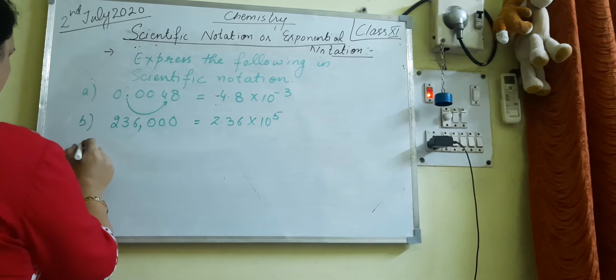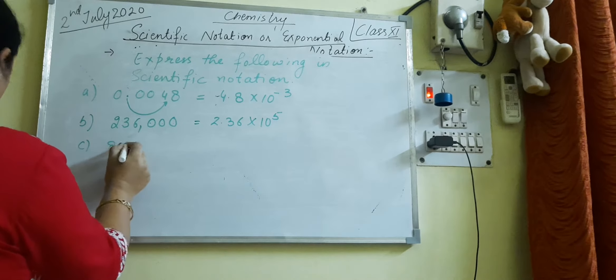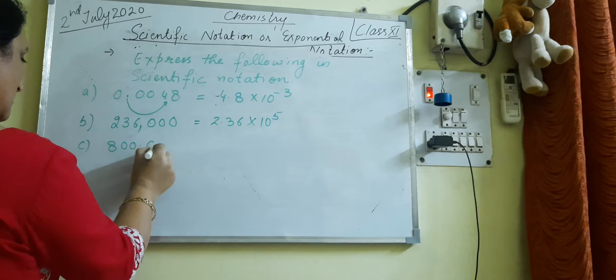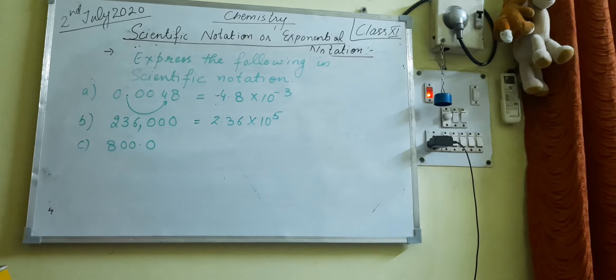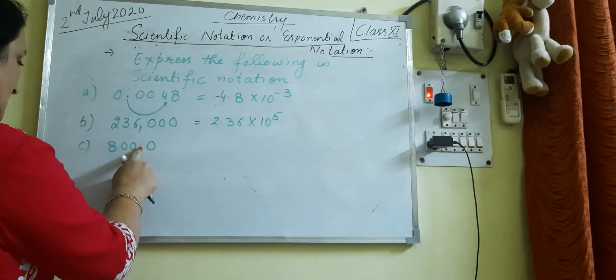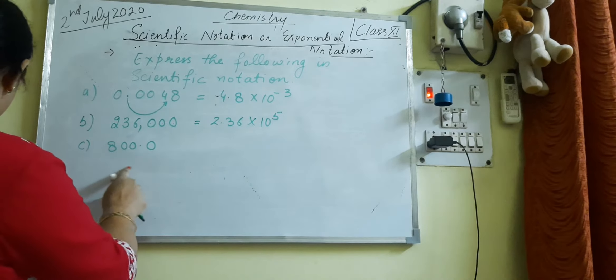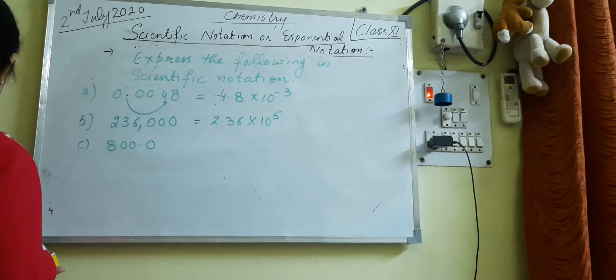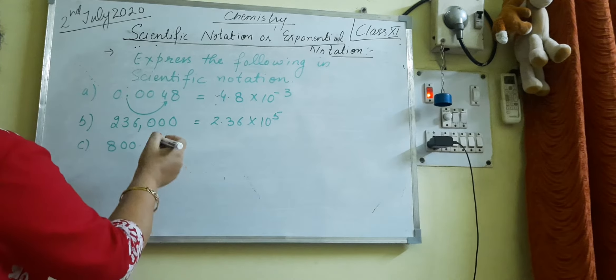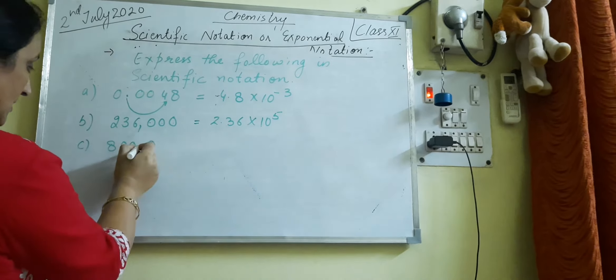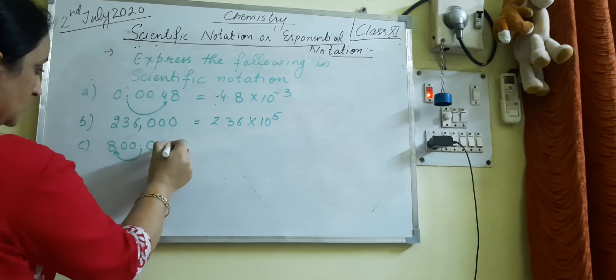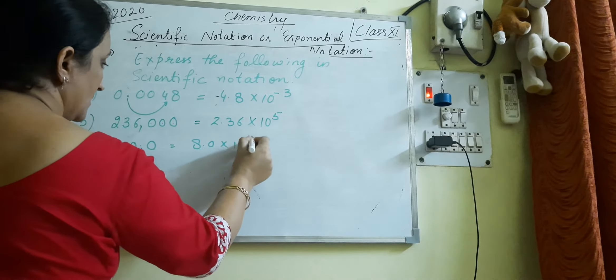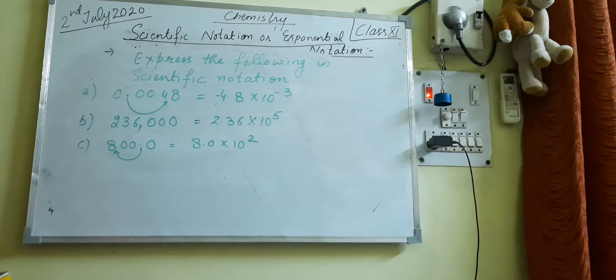And then next question: 8000. So now where is the decimal going to move? It moves toward the left. So it becomes 8.0 into 10 raised to the power 2.